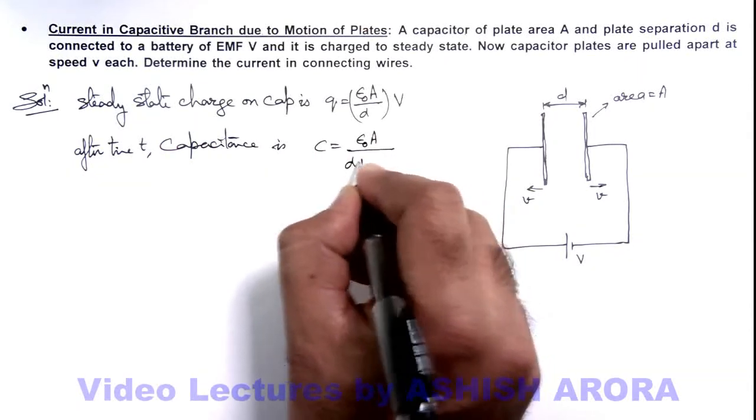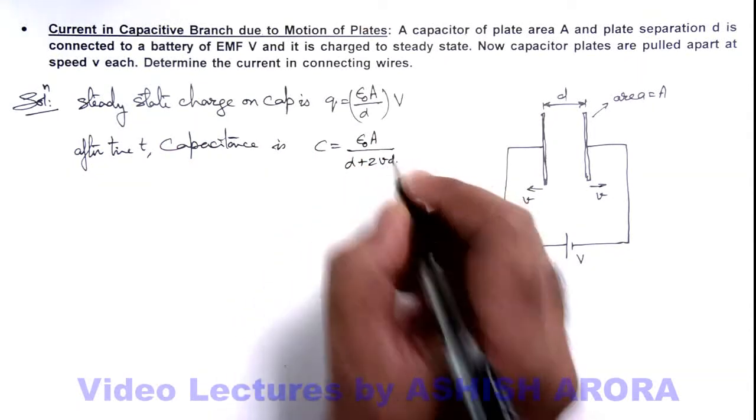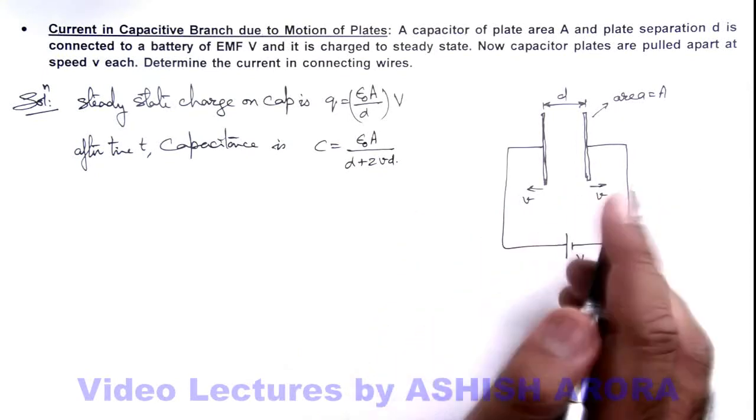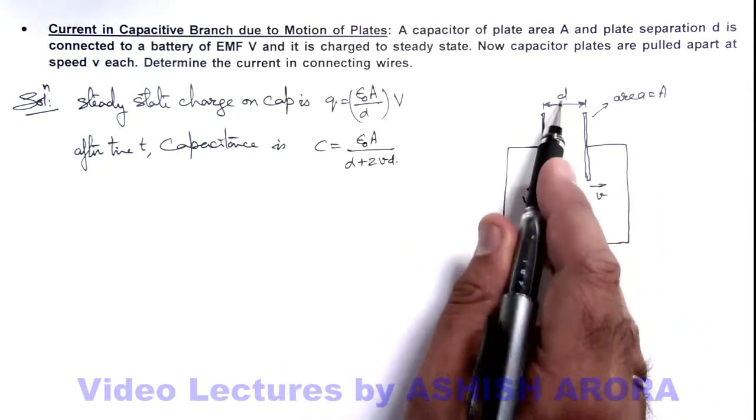Because it is given that the plates are pulled apart at speed v each, so after time t the separation will become d + 2vt.